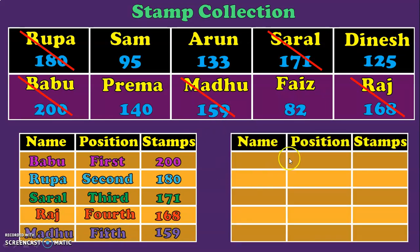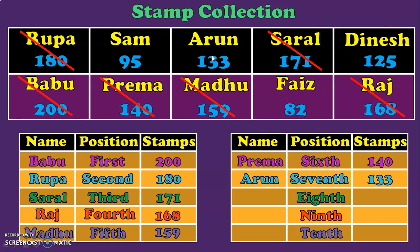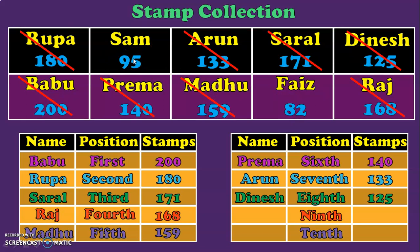Similarly, let us do the remaining positions 6th, 7th, 8th, 9th and 10th. The number smaller than 159 is Prema, who comes in 6th position with 140 stamps. Strike out Prema. Next, Arun is in 7th position with 133 stamps. Strike out Arun. Dinesh is in 8th position with 125 stamps. Strike out Dinesh and compare the remaining two-digit numbers: 95 is bigger, so Sam comes in 9th position with 95 stamps. And Fias comes in 10th position with 82 stamps.